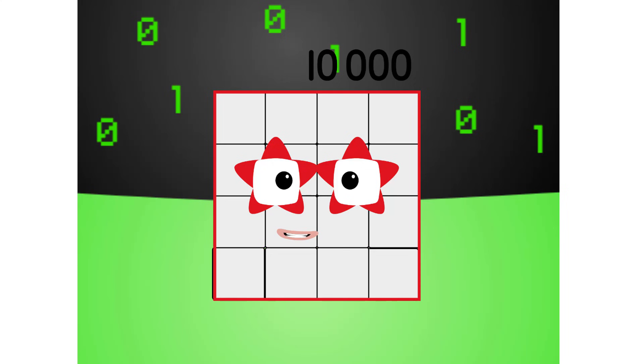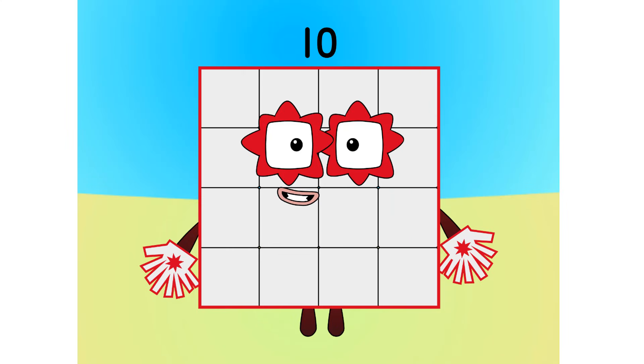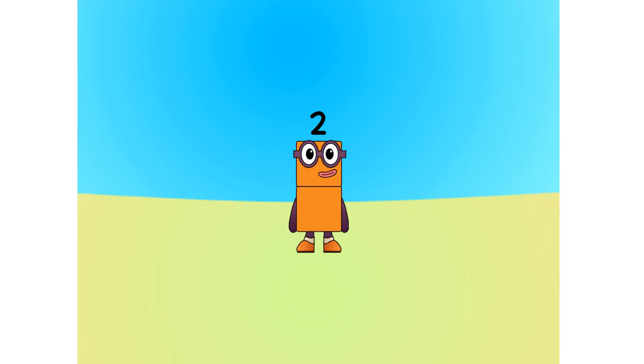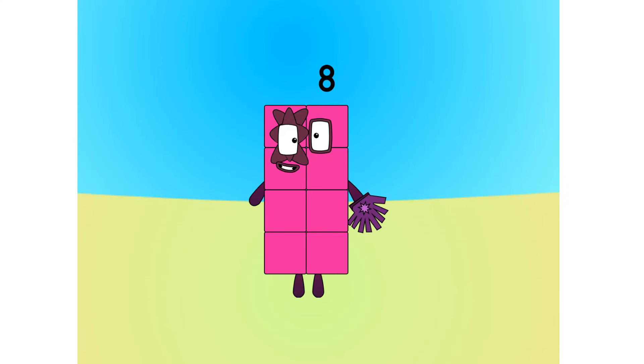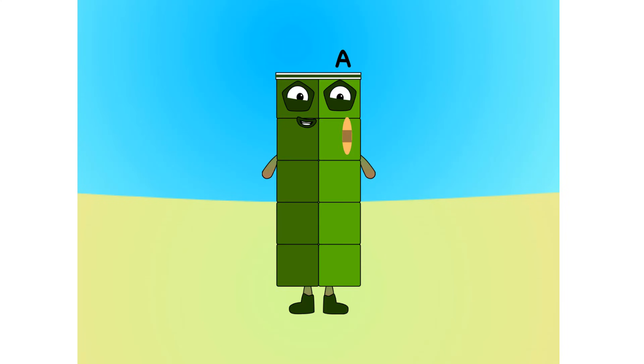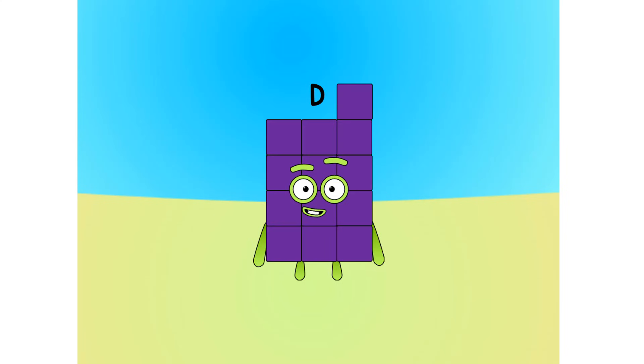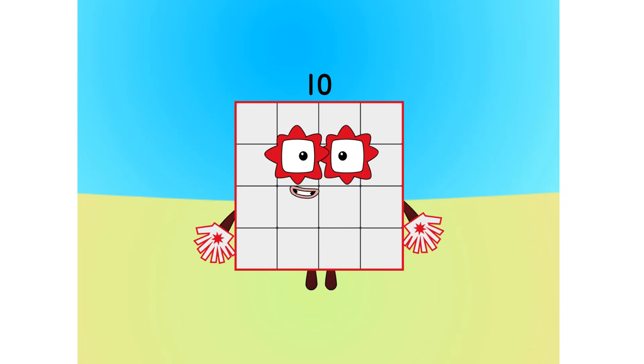Let's move on to the next base. This is base 16, also known as hexadecimal, or hex. If this is base 16, there needs to be 16 digits: 1, 2, 3, 4, 5, 6, 7, 8, 9, A, B, C, D, E, F, 10.